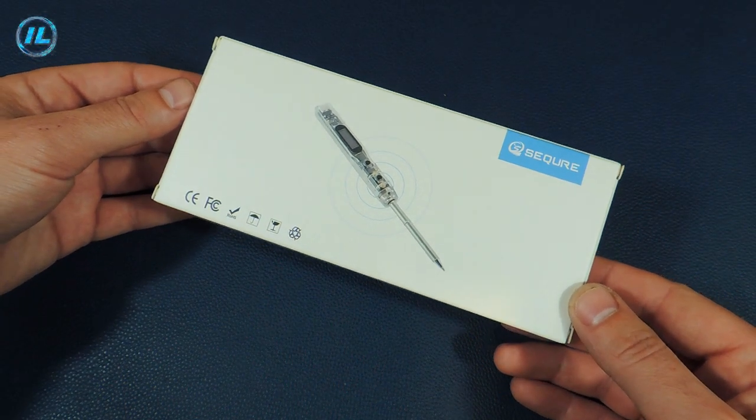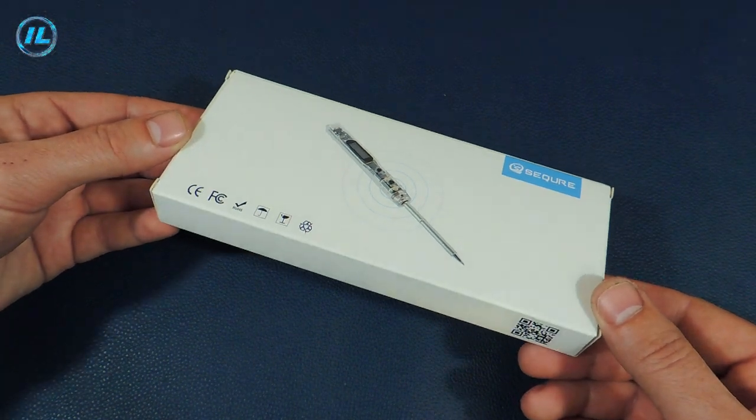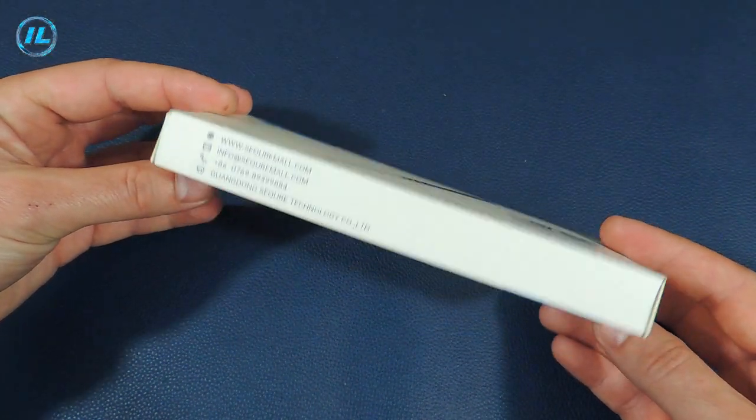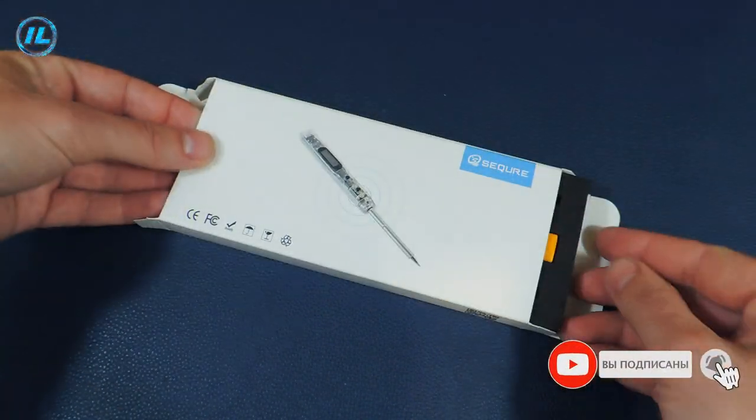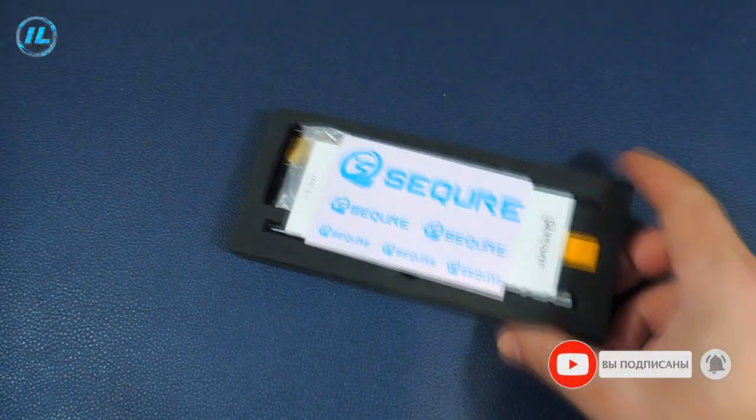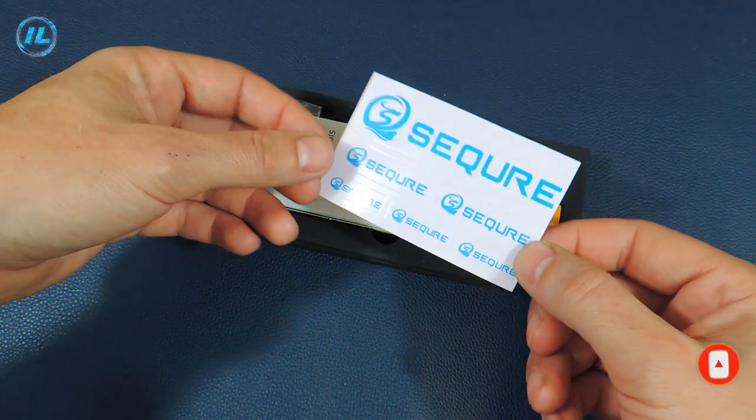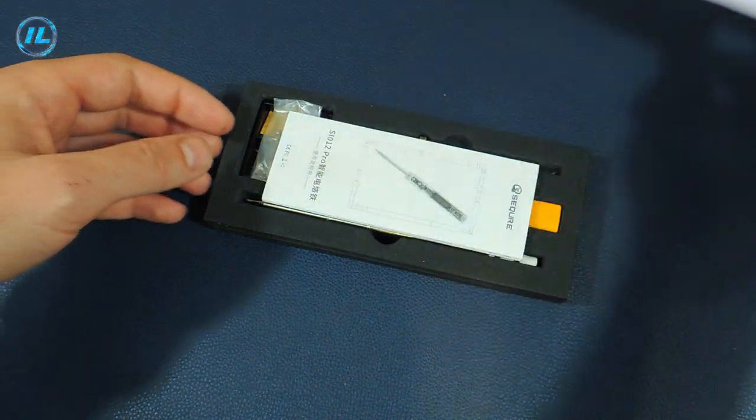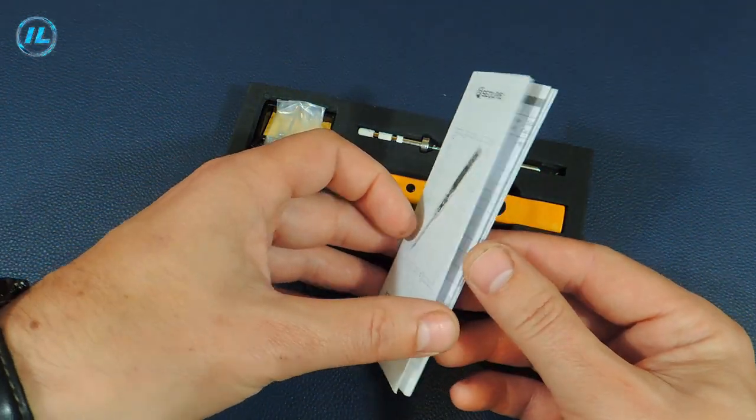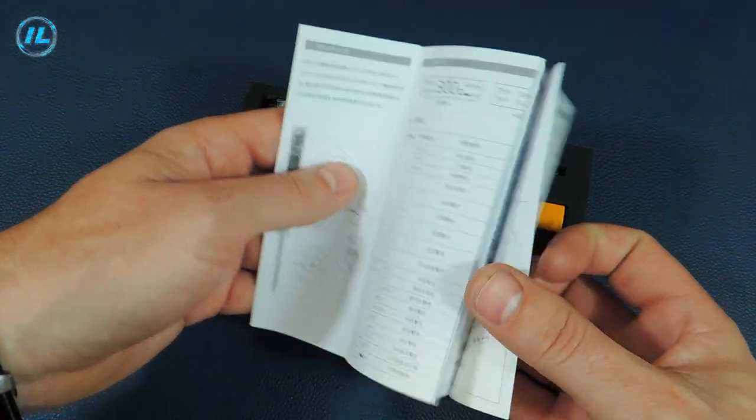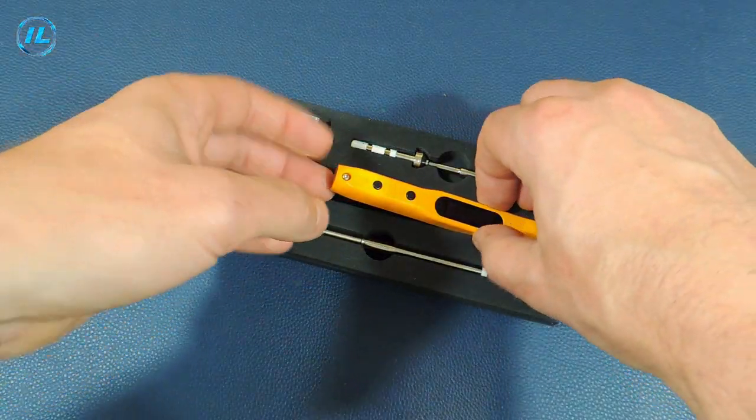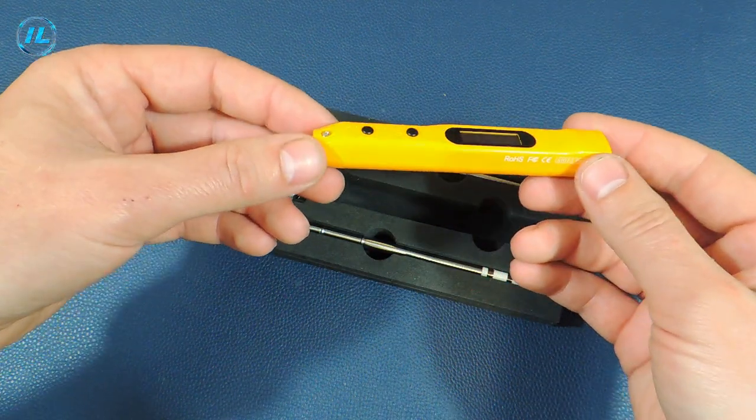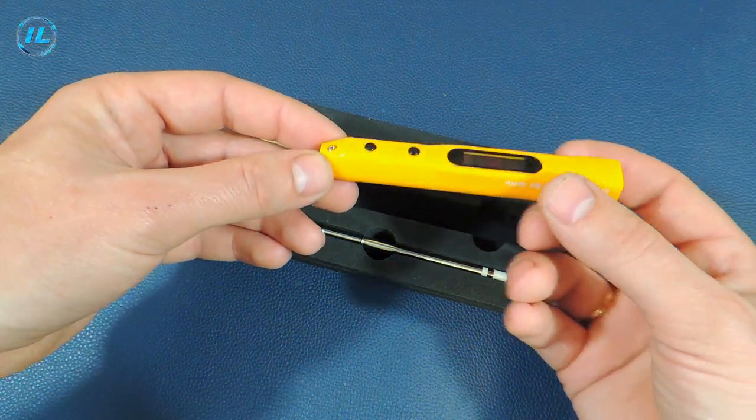The smart soldering iron from the company Secure comes in such a box. Let's see what's inside. A whole block of stickers with the company's logo. Instruction manual. It is in Chinese and English. And here is the soldering iron itself, very compact and lightweight.